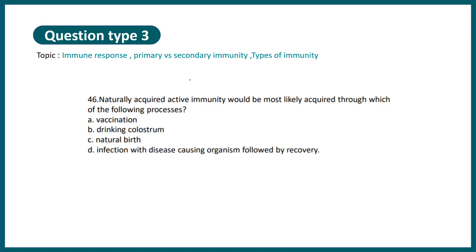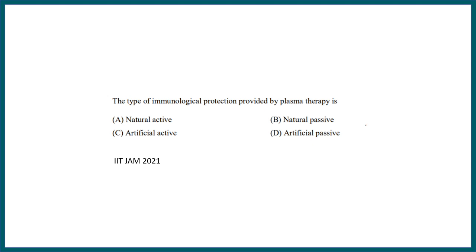Naturally acquired active immunity would most likely be acquired through which of the following — vaccination, drinking colostrum, natural birth, or infection with a disease-causing organism followed by recovery? The correct option is D: when you are infected with a pathogen and then recover, your active immunity is formed.